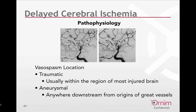By identifying vasospasm, we think we may be able to have opportunity for intervention. Vasospasm location is variable. In traumatic vasospasm, we tend to see DCI changes within the region of the most injured brain tissue — this is very heterogeneous depending on the individual patient. With aneurysmal subarachnoid hemorrhage, you can see fairly any region involved with DCI due to vasospasm. Blood at the base of the brain surrounding the great vessels at their origin can lead to vasospasm essentially in any downstream location.